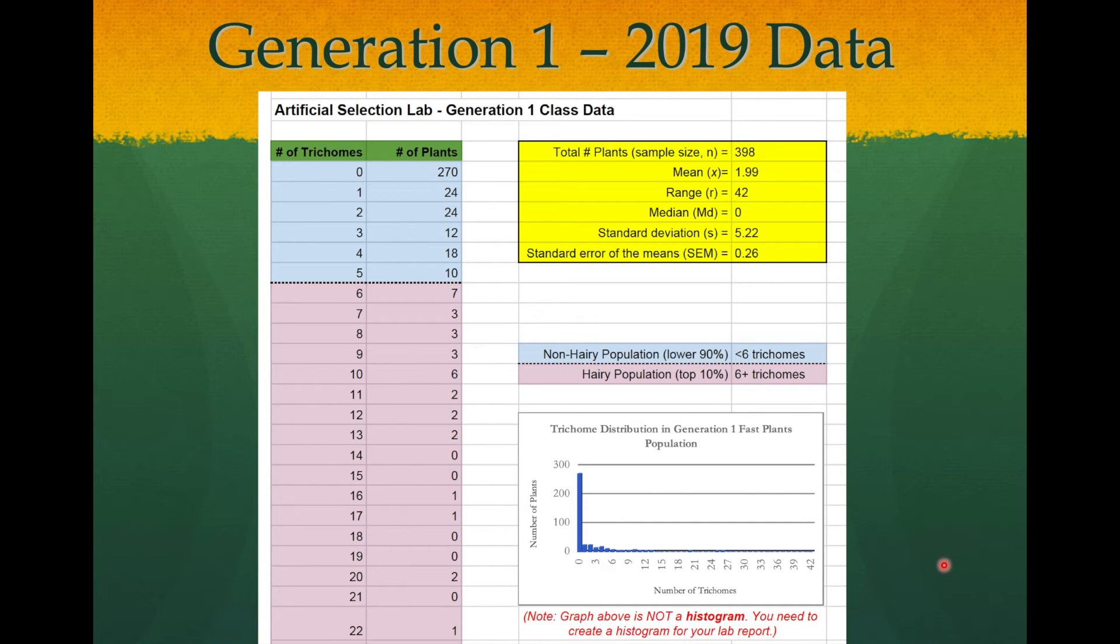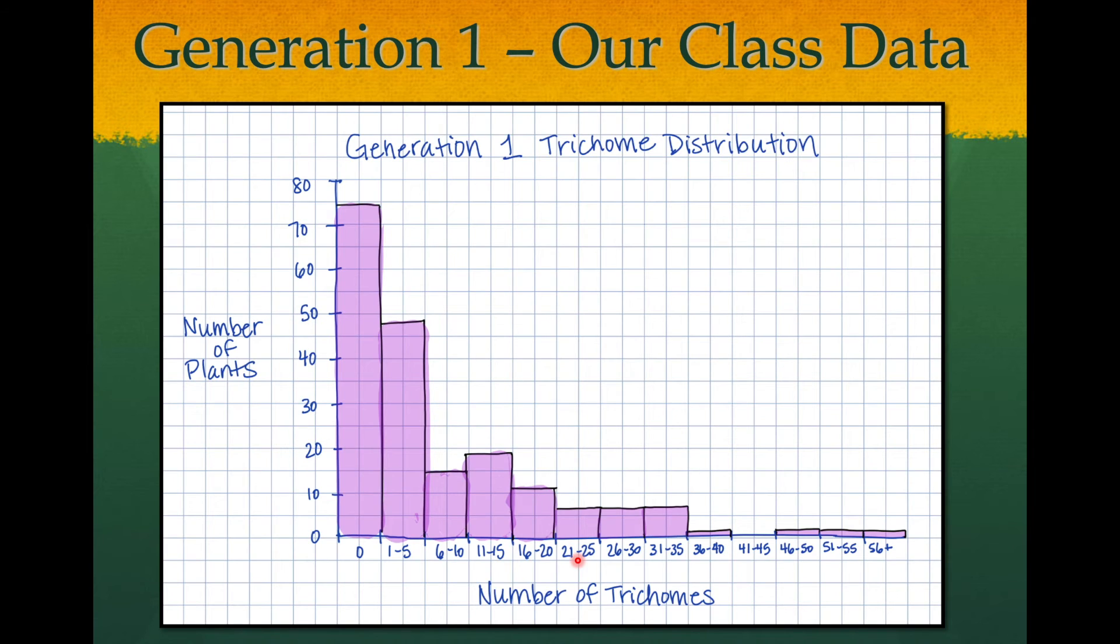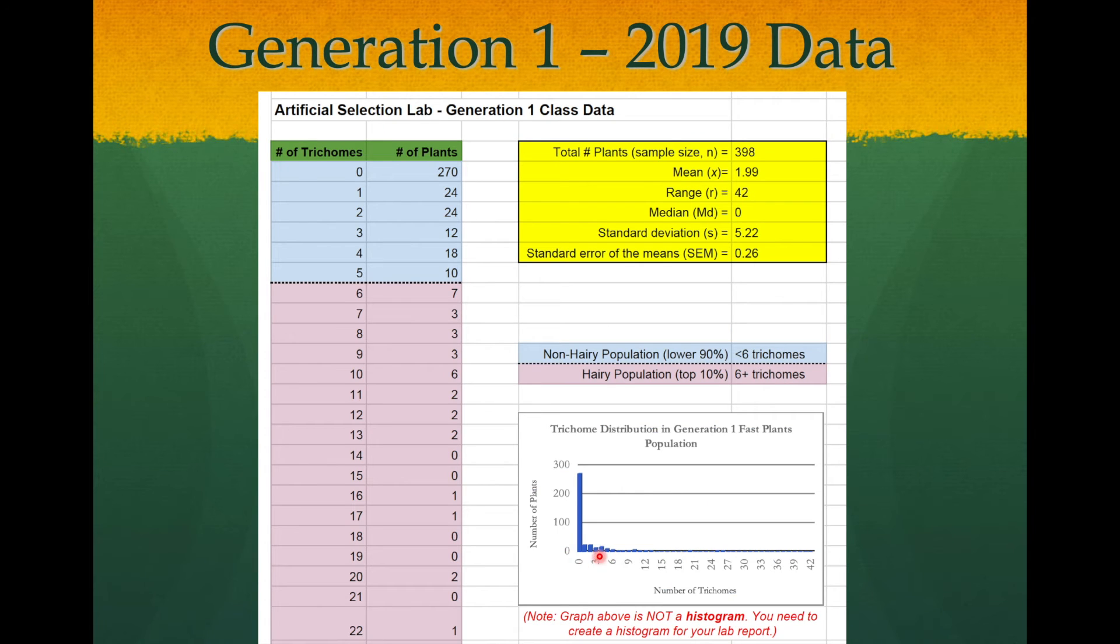Now let's compare with last year's class generation one data. This group had a few more plants, 398 plants, and I created a graph down here. I want you to note this is not a histogram, this does actually plot all the raw data points, but we could imagine that if you group them into these categories, into these bins, you would see this graph really would be very similar to our data, where it would be heavily skewed to the left, where most of the plants are not very hairy.